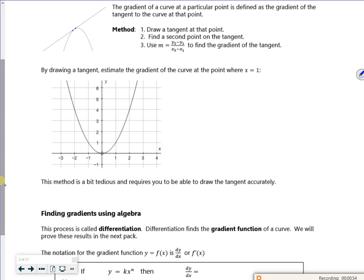So this says by drawing a tangent estimate the gradient when x is one. So there's my dodgy tangent there. If I've done it right, I'd be able to work out that gradient there. So m is just two. The gradient is two.